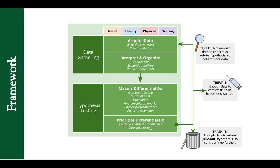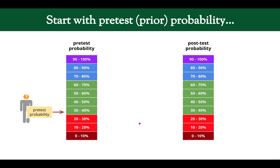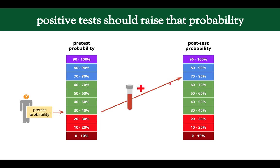Bayesian reasoning is the ability to go from your pre-test to your post-test probability. Let's say we have a patient with a disease and a pre-test probability of around 33%. You order a test, and if it's positive, it pushes the probability up — so we went from 33% to 73%.